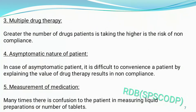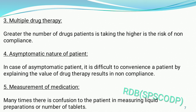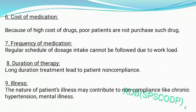The fourth point is the asymptomatic nature of the patient. In case of an asymptomatic patient, it is difficult to convey to the patient the value of drug therapy, resulting in non-compliance. The fifth point is measurement of medication — many times there is confusion in measuring liquid preparations or the number of tablets. With liquid medicaments, incorrect measurement leads to under or over-dosing, causing non-compliance.